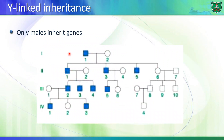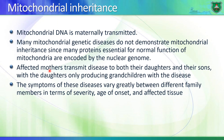Y-linked inheritance is straightforward: the disorder is transmitted in all males in every single generation because they get the defective Y chromosome from an affected father. Mitochondrial disorders are maternally transmitted — mitochondrial DNA is passed from females to their offspring. There is a lot of heterogeneity in mitochondrial DNA and it gets worse with time and age, because mitochondrial DNA accumulates more mutations over time, becoming more defective with age. There is variability in mitochondrial inheritance.